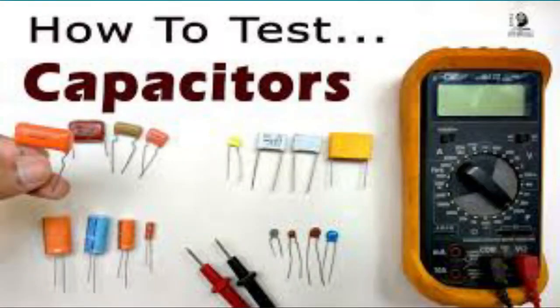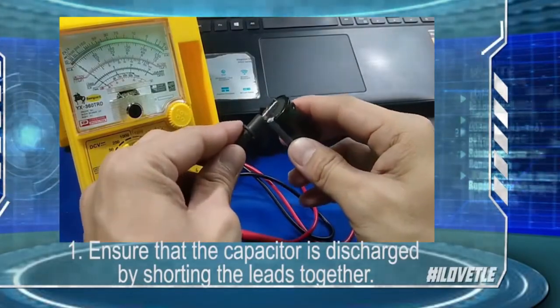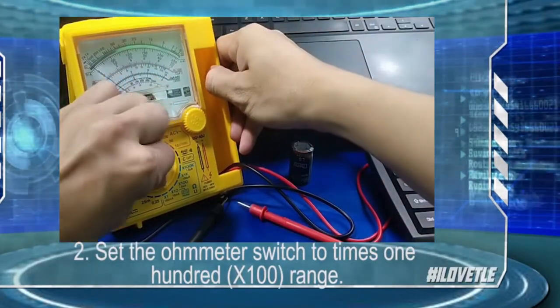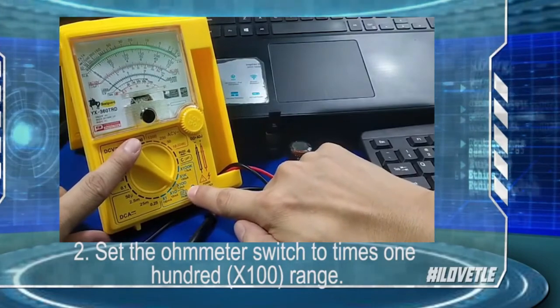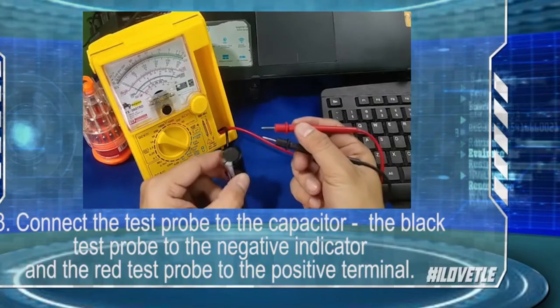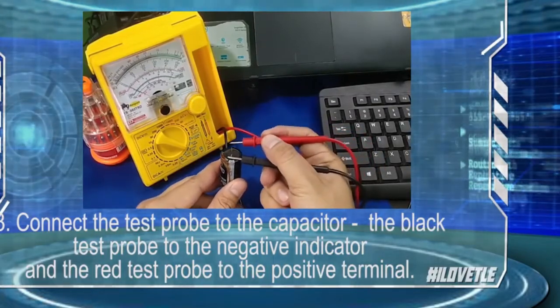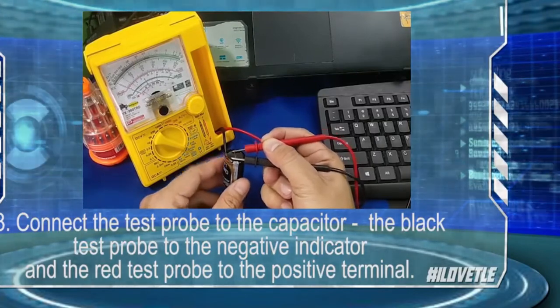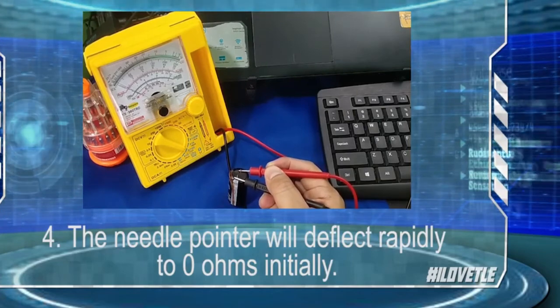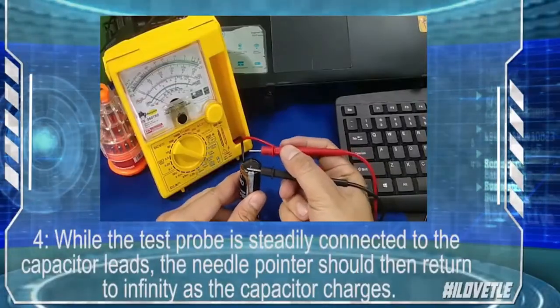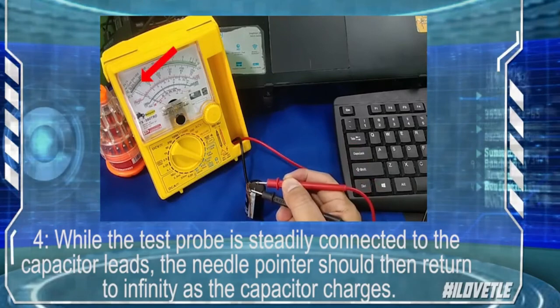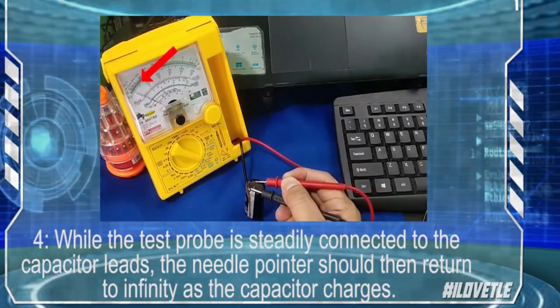Testing a capacitor using an analog ohmmeter. Step 1, ensure that the capacitor is discharged by shorting the leads together. Step 2, set the ohmmeter switch to x100 or times 100 range. Step 3, connect the test probe to the capacitor. The black test probe to the negative indicator and the red test probe to the positive terminal. The needle pointer will deflect rapidly to zero ohms initially. Step 4, while the test probe is steadily connected to the capacitor leads, the needle pointer should then return to infinity as the capacitor charges.